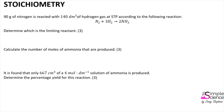Our starting point in determining the limiting reactant is always to calculate the number of moles of each of the reactants present. Since there is a mass of nitrogen given, we say that the number of moles of nitrogen is equal to the mass given divided by the molar mass of nitrogen. The mass given is 90 grams and the molar mass for nitrogen is 28, which means there are 3.214 moles of nitrogen present.